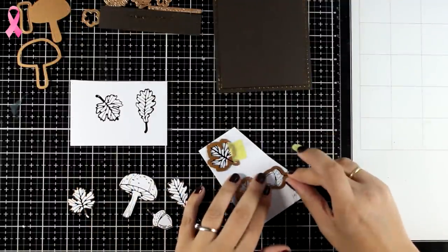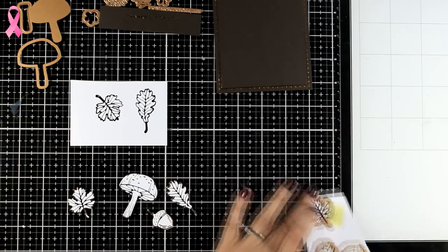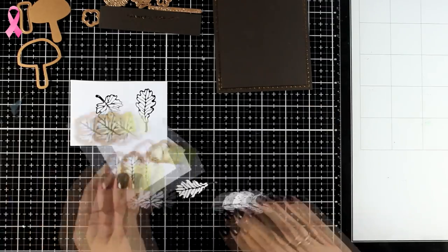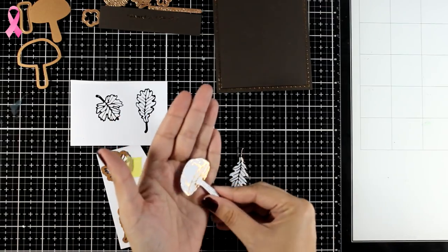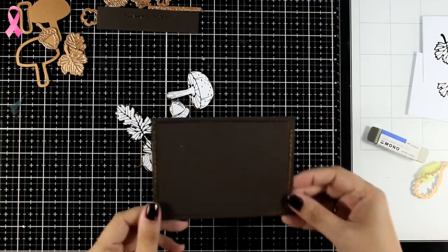In the set you do get dies to cut out all your foiled images. I did repeat the same process to end up with a bunch of those die cuts since I'm planning to create a wreath.